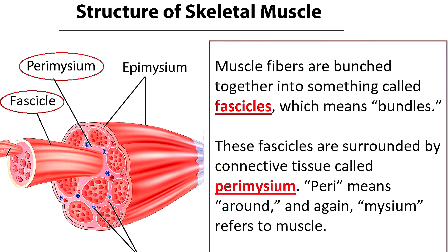Next, you'll notice that the muscle fibers are going to be bunched together into something called fascicles, which means bundles, and these fascicles are going to be surrounded by connective tissue called perimysium. Peri means around and again mysium refers to the muscle, so the perimysium is around the fascicles that bundle up these individual muscle fibers.